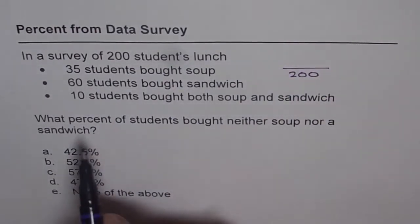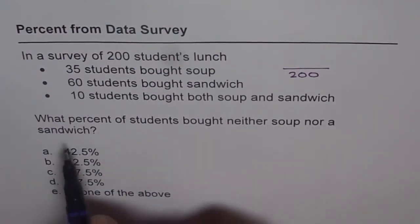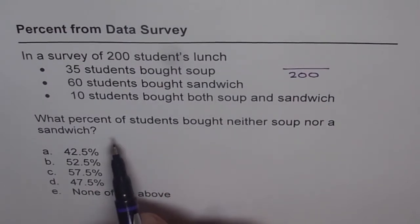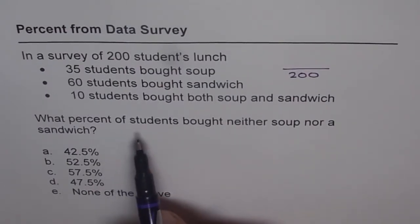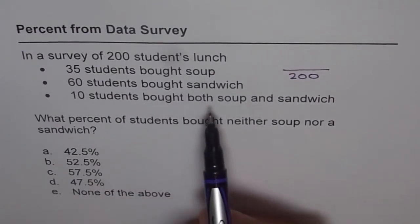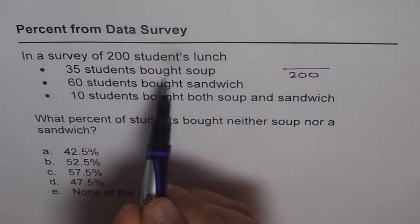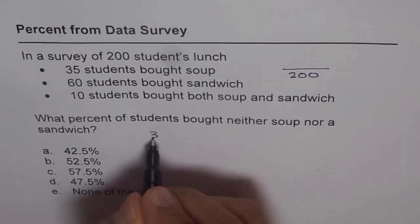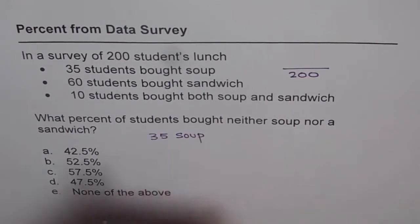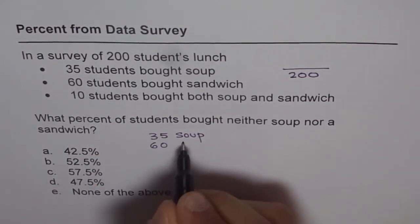What do we need to find? What percent of students bought neither soup nor a sandwich? So let's first find how many of the 200 bought sandwich or soup. It is given that 35 students bought soup, and 60 students bought sandwich.